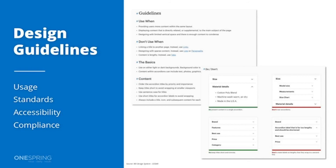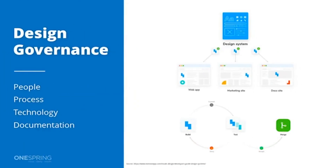With WCAG 2.1, you have different levels: Level A, double-A, and triple-A. Many organizations will say as part of their design principles that they want to be compliant to a double-A level. That's something you'd want to include in your guidelines for each component, to show how to implement it to ensure you remain WCAG double-A compliant whenever that component is implemented within your application.